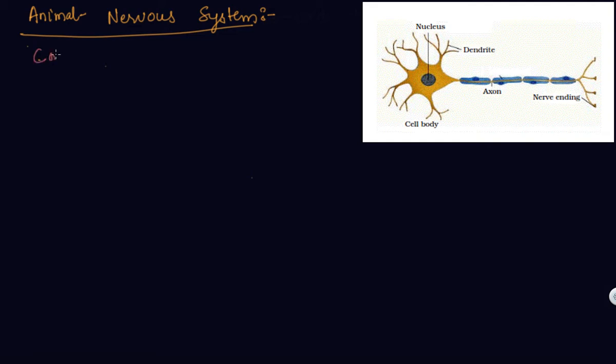So today we are starting a new chapter named Control and Coordination. In this chapter we will be starting with Animal Nervous System.